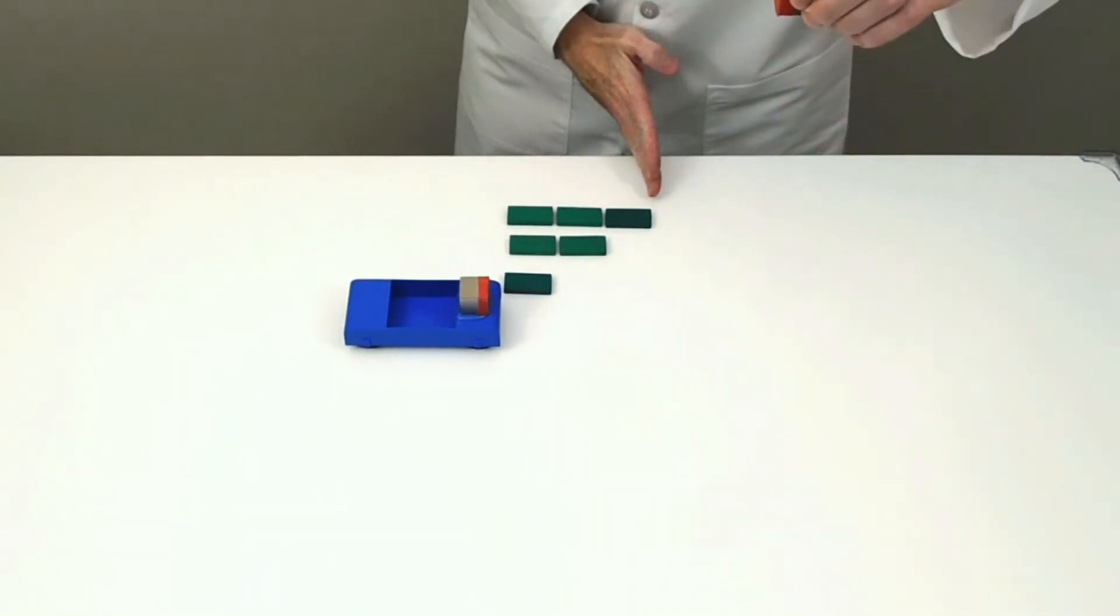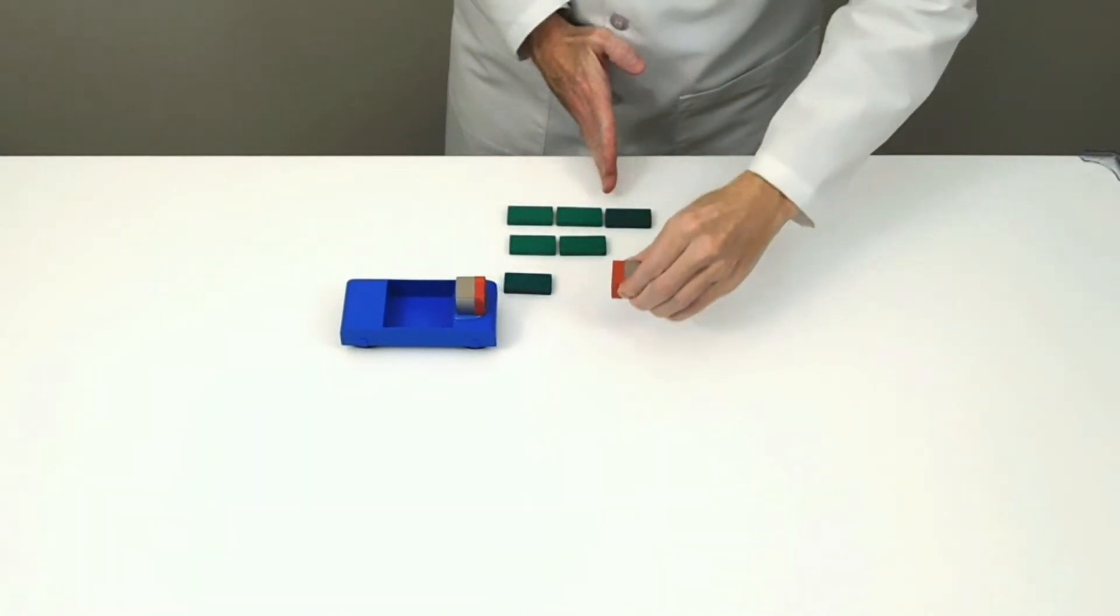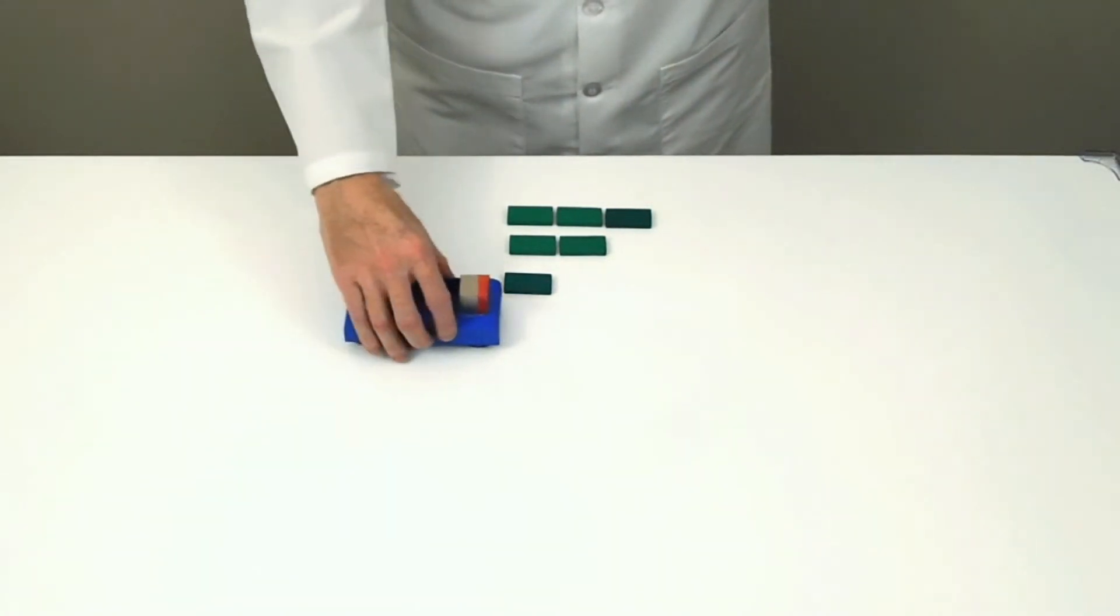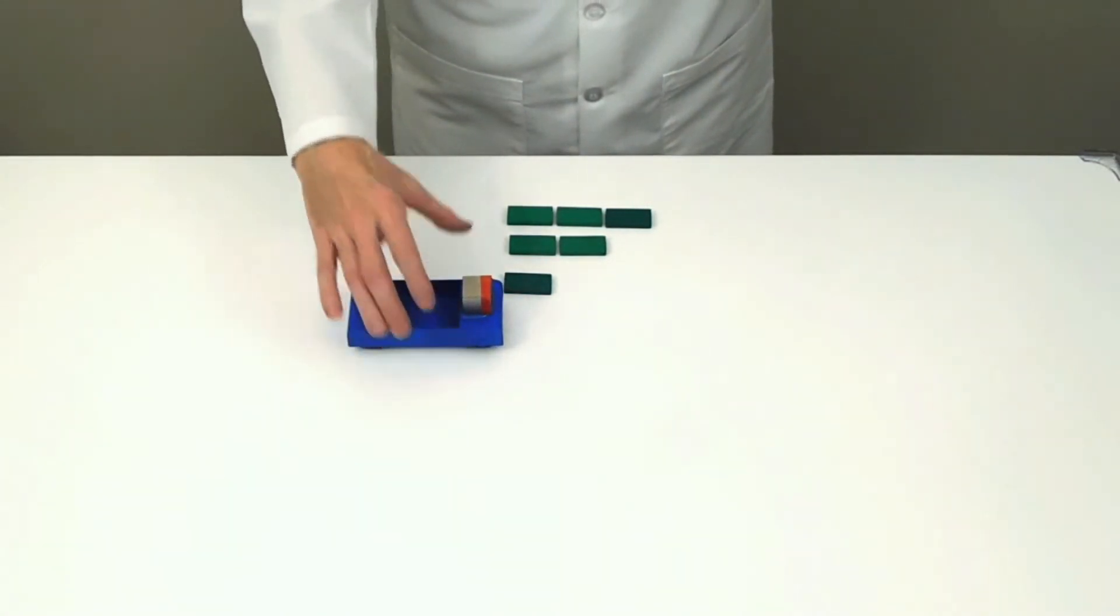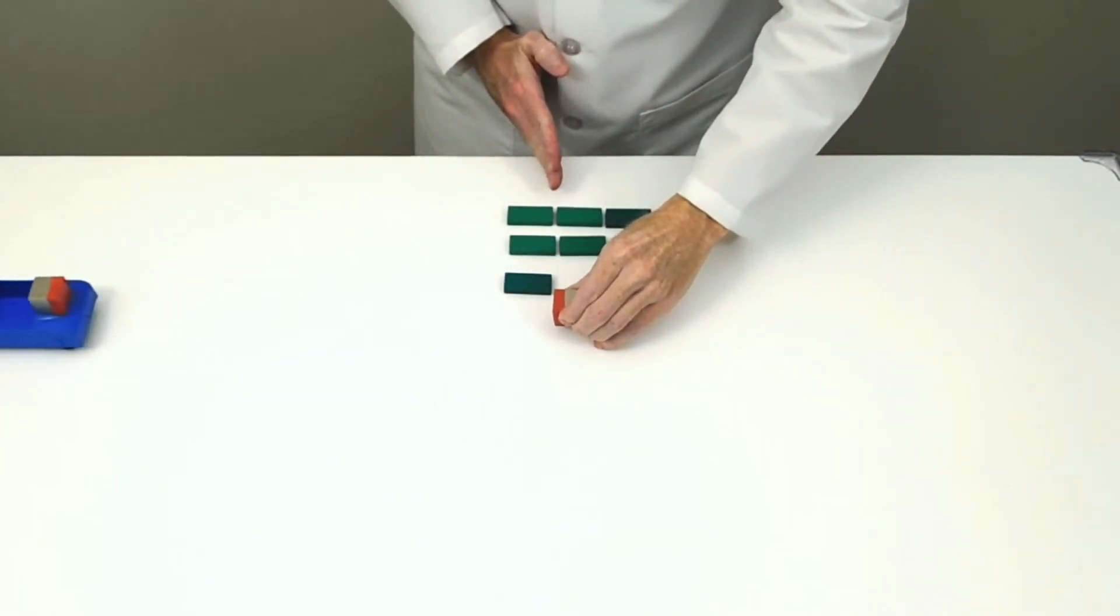From three blocks away, the magnetic force is very weak. From two blocks away, the magnetic force is medium. From one block away, the magnetic force is high.